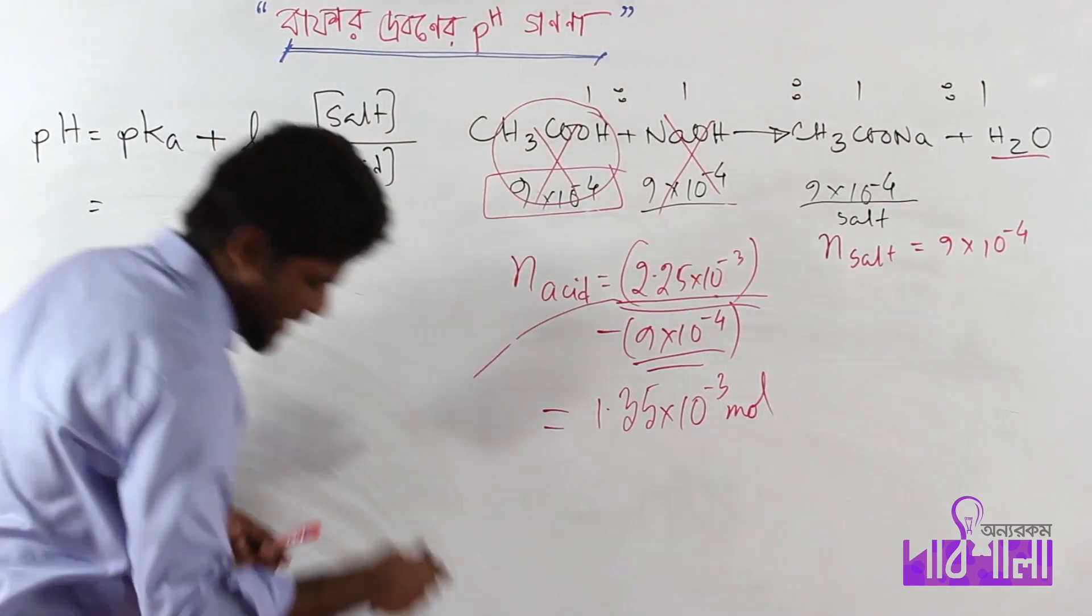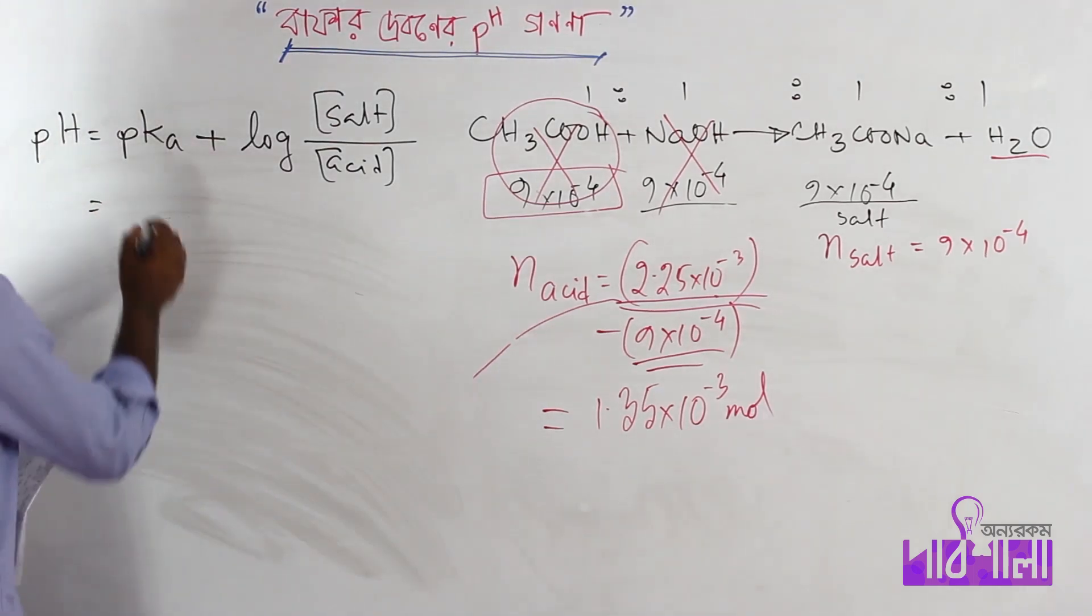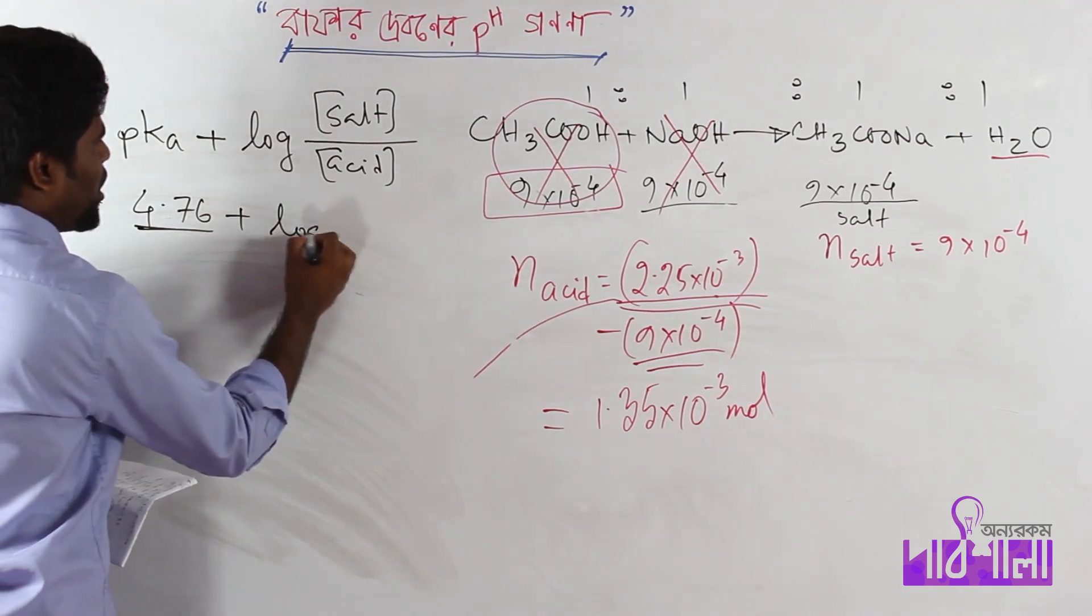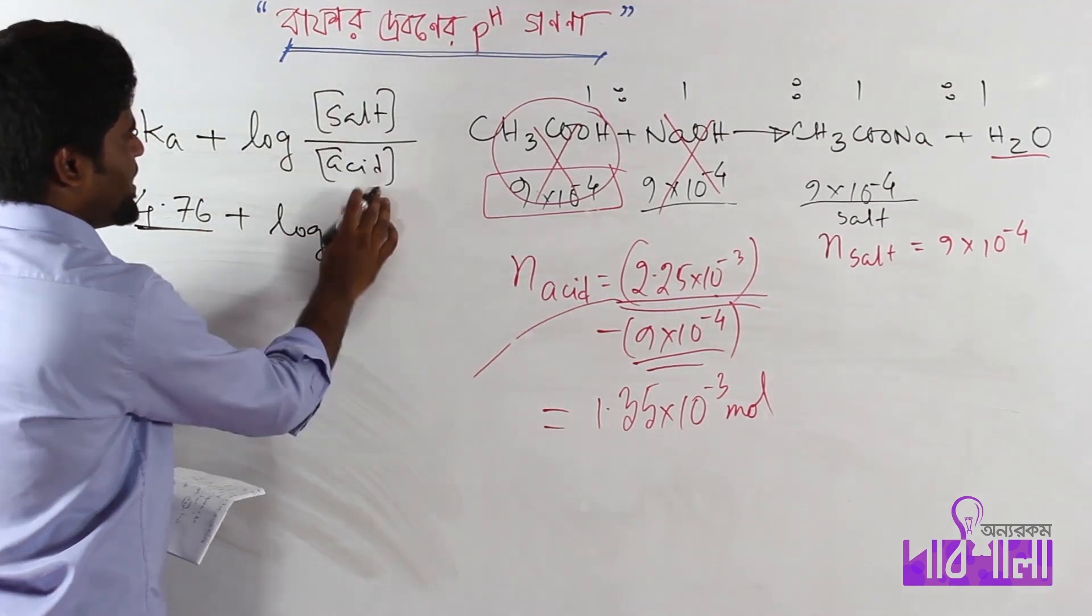Henderson-Hasselbalch equation: pH is equal to pKa plus log of salt divided by acid. The pKa value is 4.76. We need log of salt divided by acid.